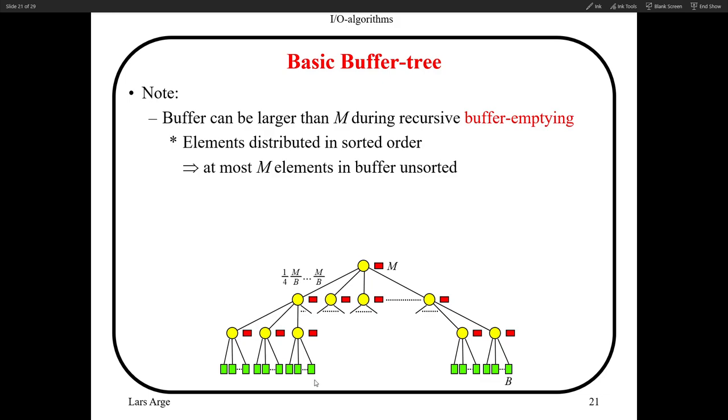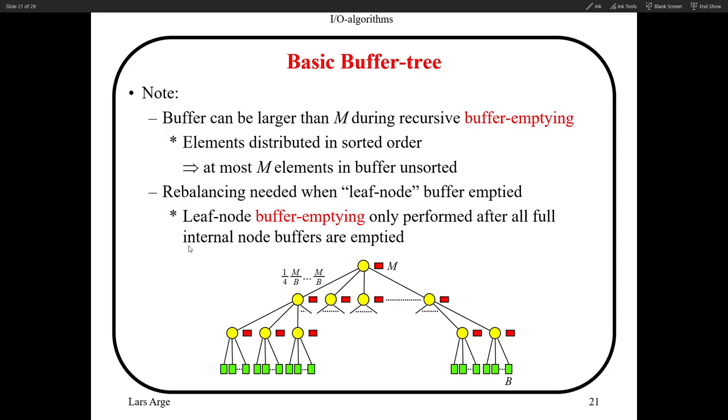Okay, so let's look at the buffer emptying. So one minor issue here is that the buffers can actually be larger than M, because of the recursive buffer emptying operation that we're going to do. This is because at some point, when you empty a buffer, you empty a buffer top-down, so you get some elements from the parents pushed into you. So which means that your buffer could temporarily be larger than M. To handle this, we assume that the elements in every buffer are in sorted order, are distributed in sorted order. But since we're going to receive at most M elements from every buffer, we can have at most M elements in each buffer that are unsorted.